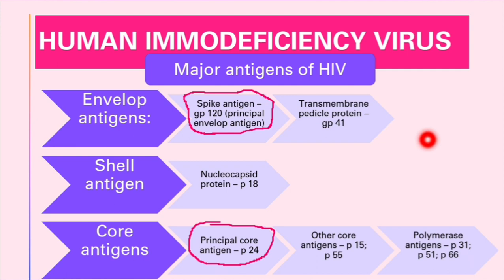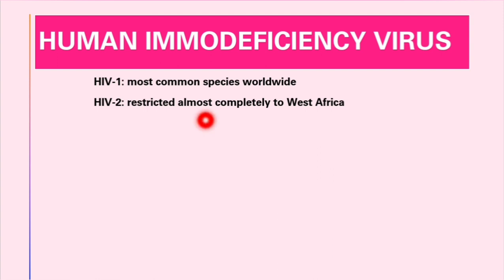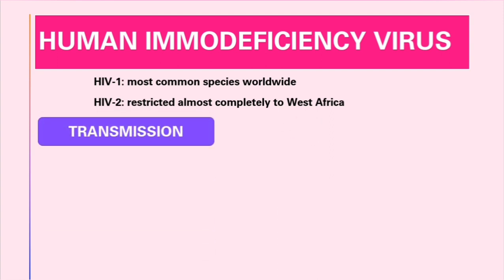These antigens — the envelope antigens and the core antigens — undergo frequent variation. We have two types of HIV: HIV-1 and HIV-2. The most common one is HIV-1, while HIV-2 is mainly found in West Africa.